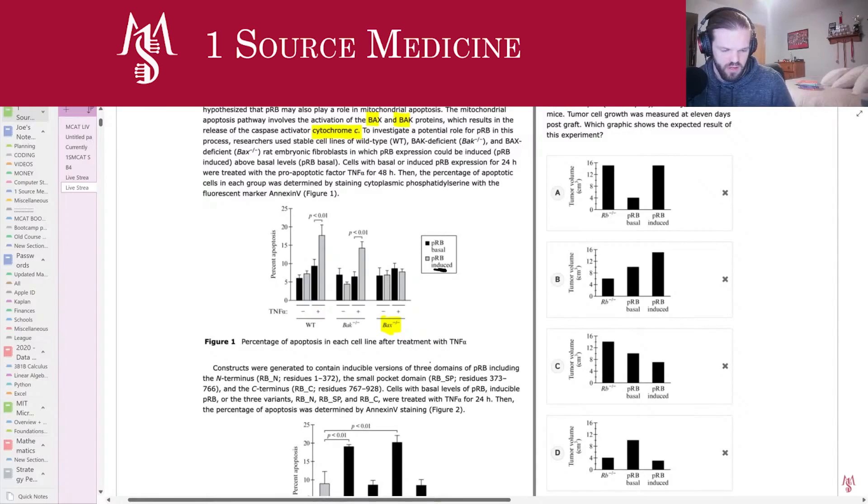So if we look at all of these graphs right here, we see that the cases where PRB is induced, right, the gray graphs, the lighter colored ones, are for the most part, at least in the wild type, higher than their darker counterparts, meaning that these cells have more levels of PRB and therefore more apoptosis. And so that means that PRB is likely to cause apoptosis, which means it's likely to make it more difficult for a cell to cause a cancer.